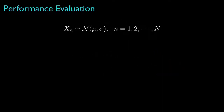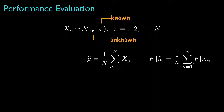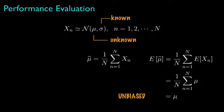As an example, let's consider a situation where the elements of the observation vector are independent, identically distributed random variables, each with a mean mu and a standard deviation sigma. Furthermore, the standard deviation is known, but the mean is an unknown parameter that we need to estimate. One possible estimator is the sample mean, which for this problem turns out to be the maximum likelihood estimator. The expected value for this estimator is the sum of the expected values for each element of the observation vector, which turns out to be the sum of the means, so that the expected value for the estimator equals the unknown parameter mu. In this case, we say that the estimator is unbiased.